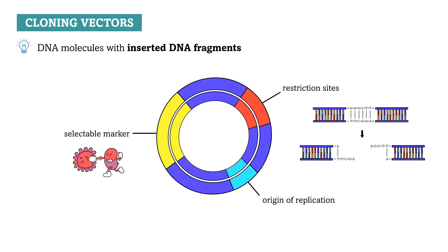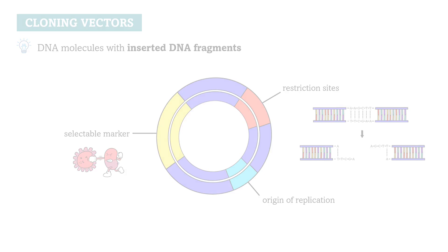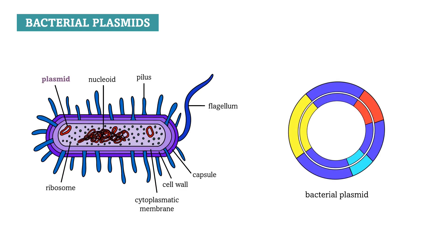Now, the most important and also the first vectors developed are genetically modified bacterial plasmids. Bacterial plasmids are circular, double-stranded DNA molecules that can replicate independently from the chromosomes within bacterial cells they are inserted into, which meets our second criterion that they should be able to replicate independently.